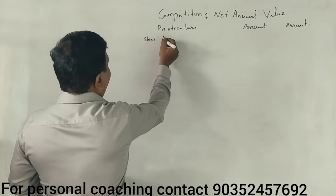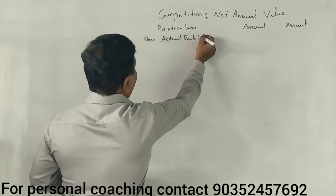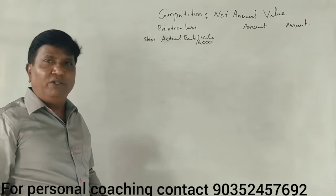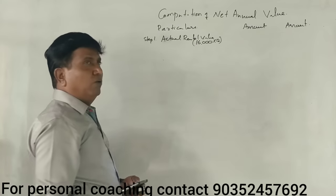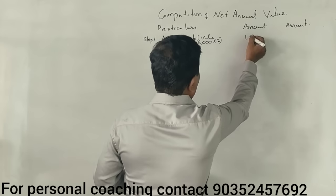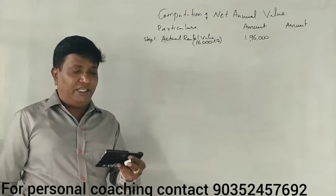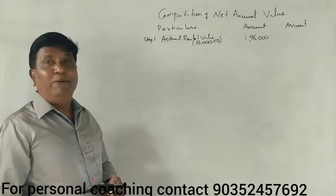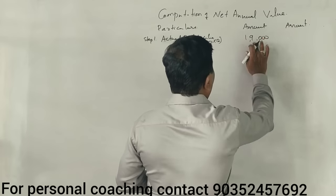Step 1: we compute the actual rental value. For let-out property, the actual rent received. The annual rental value comes to 1,92,000. After adjustment, we get 92,000 — wait, let me recalculate. The actual rent per month is 16,000, so annual is 1,92,000.